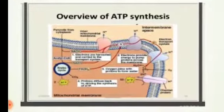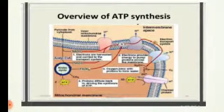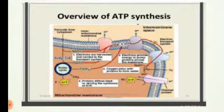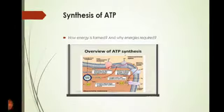ATP synthesis summary: first, electrons are harvested and carried towards the transport system; then electrons provide energy to pump protons across the membrane; third step, oxygen joins with protons to form water; and the fourth step is the synthesis of ATP.